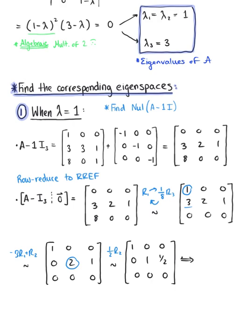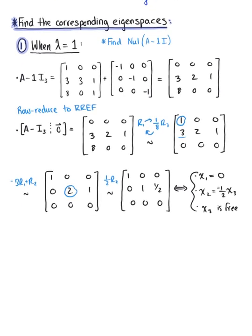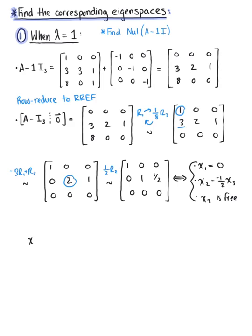From the RREF, we can read off that x sub 1 equals 0, that x sub 2 equals negative 1/2 times x sub 3, and that x sub 3 is free. We can write the general solution as x sub 3 times the vector 0, negative 1/2, 1.